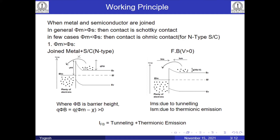This is Yogesh Singh. My part in this term paper covers working properties and applications. When metal and semiconductor are joined, depending upon the relation of their work functions, it can be either a Schottky contact or an ohmic contact. Here we are using an N-type semiconductor. In the first case, when the metal work function is greater than the semiconductor work function and we join them, there will be band bending.